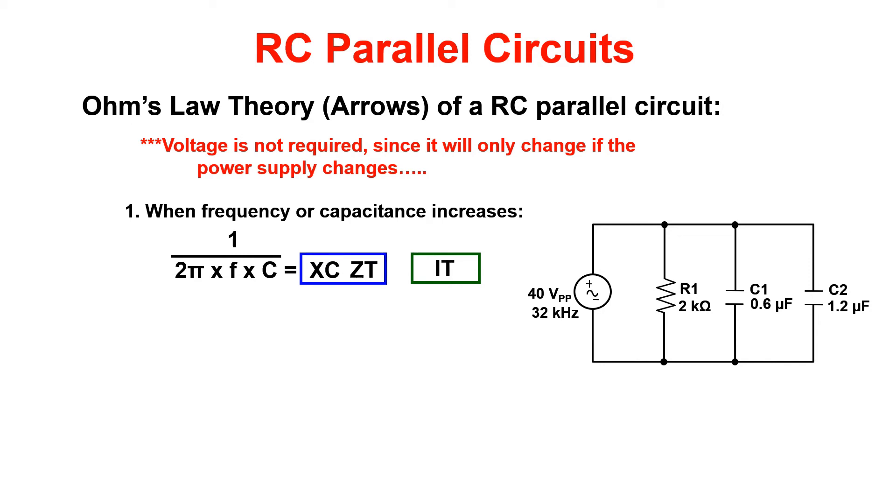This means that the only values we are concerned with in our couch coffee table are XC, ZT, and IT.